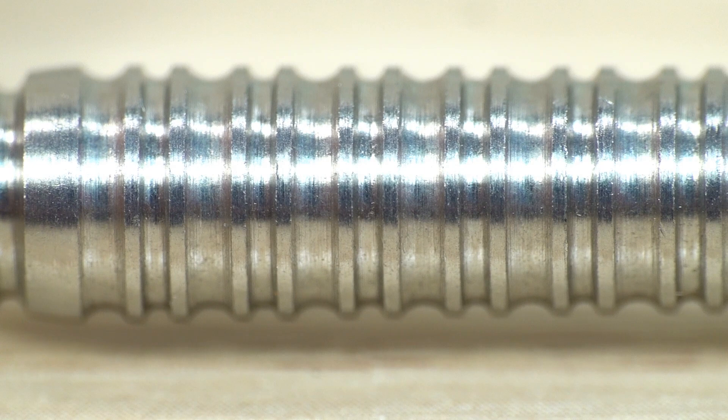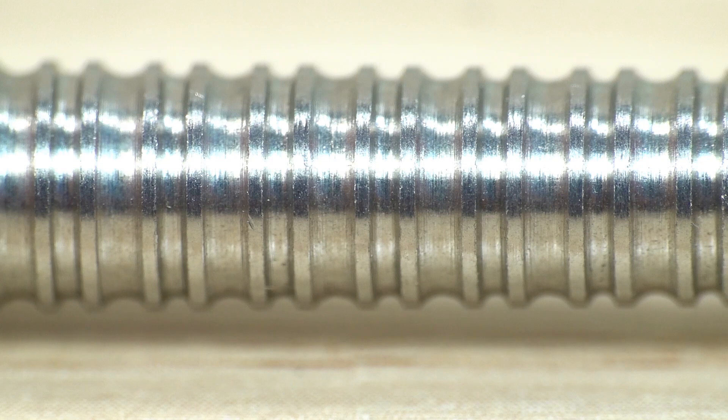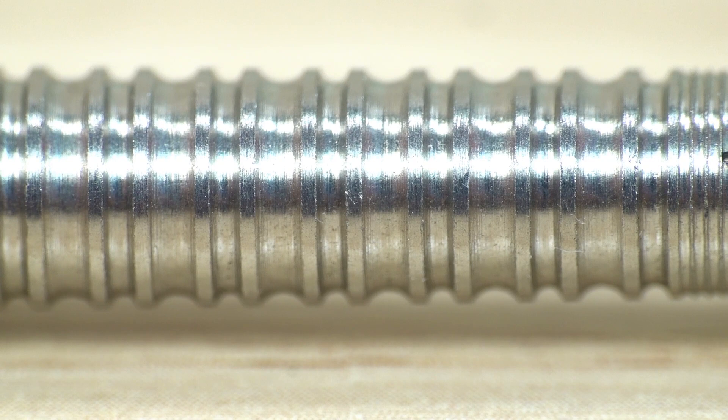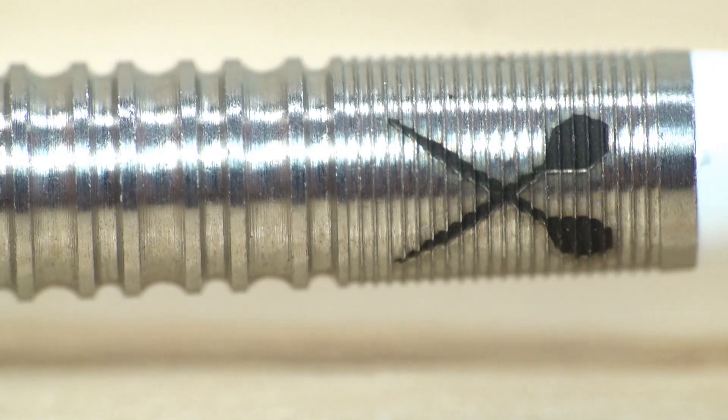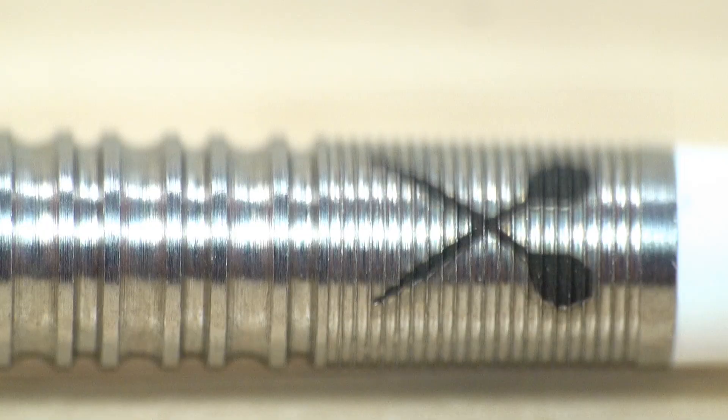But then as you get towards the rear, it narrows. And then on the very end, you've got a micro grip section and you've got the Maple Leaf logo and the Loxley crossed arrows logo. So there you go. That's the super close look at the Loxley John Part darts.